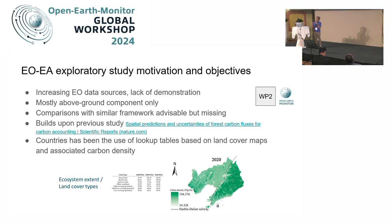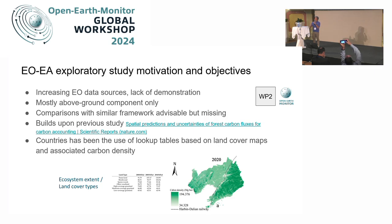We were motivated by the fact that there's been increasing EO analysis-ready data — biomass data, soil organic carbon datasets, and so on. But the actual demonstration of how to use them in ecosystem accounting has very rarely been done. The forest carbon accounting I'm talking about for forest ecosystems is mainly considering the above-ground component only. Of course, there's below-ground — the roots — and the soil organic component. That should also be accounted for to have a more comprehensive carbon account.